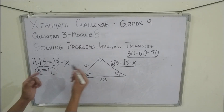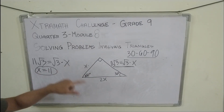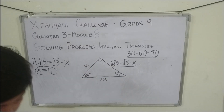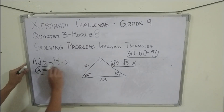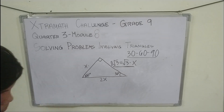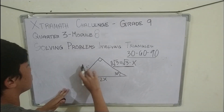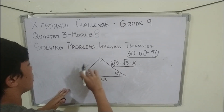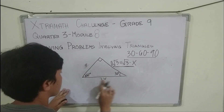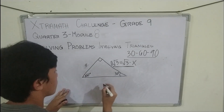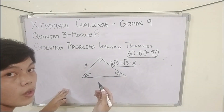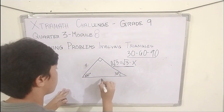Now we substitute the value of x into the sides. This side is now equal to 11, and this side is equal to 22 since it is 2x, or 2 times 11.